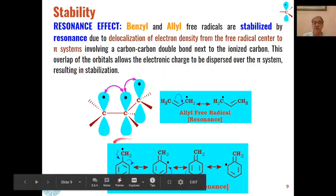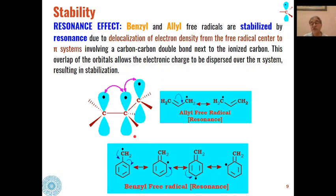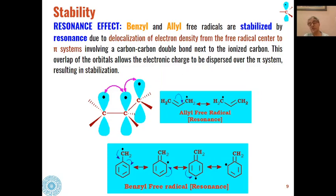Similarly, for the benzyl free radical, delocalization of the odd electron with the aromatic ring gives four resonating structures. More the number of resonating structures, higher is the stability of the free radical. That is why a benzylic free radical is more stable than the allylic free radical. Both are more stable than the alkyl free radical because the resonance effect is more pronounced than hyperconjugation.